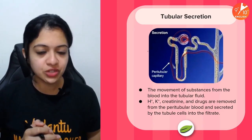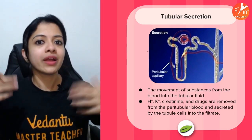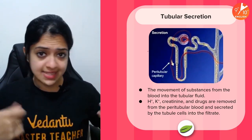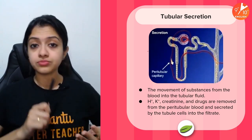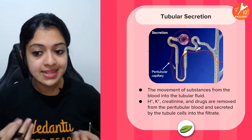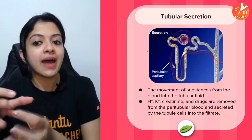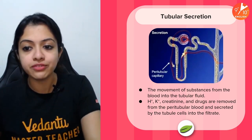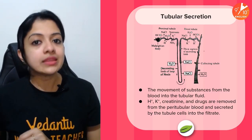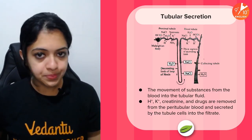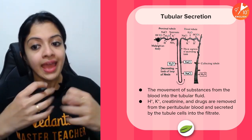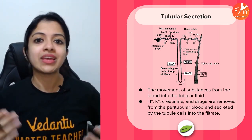Then comes the last step, which is tubular secretion, wherein your blood does one final round of cleaning — secreting hydrogen ions, potassium ions, creatinine, and any kinds of drugs which are in excess and not required by your body. From the peritubular capillaries, they get secreted by the tubular cells back into the filtrate. Now it becomes part of what we call urine. Tubular secretion occurs and the filtrate comes into the collecting tubule in the form of urine.